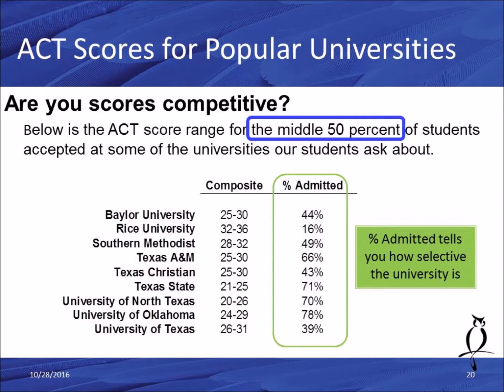The second column on the chart is percent admitted — how selective the university is. For Baylor it's 44%, Rice is more selective at 16%, versus A&M at 66% or TCU at 43%. The least selective on this list is University of Oklahoma at 78%.